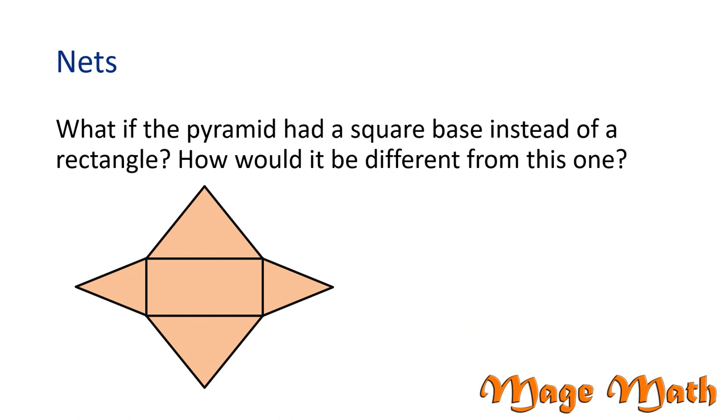What if the pyramid had a square base instead of a rectangle? How would it be different from this one? What would that net look like? That's right. The base is a square, so the triangles would all be the same size.